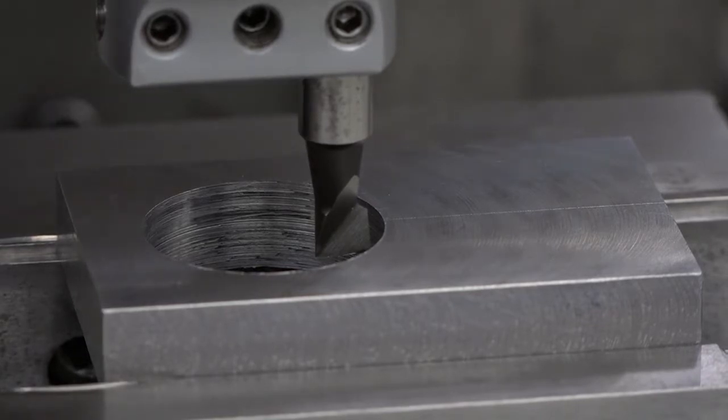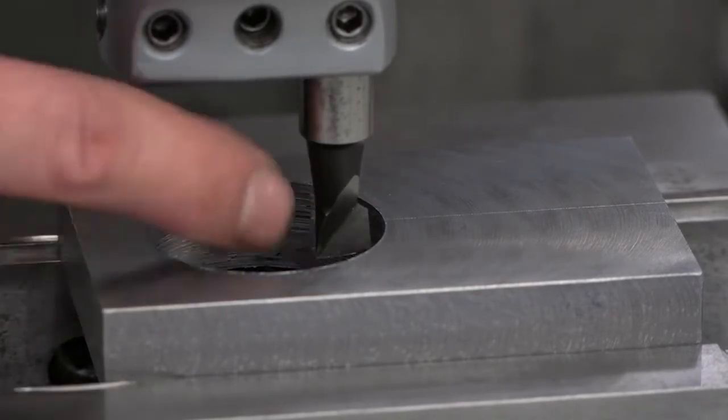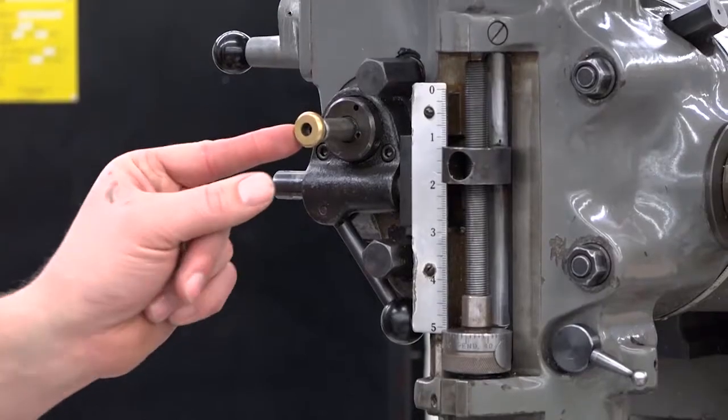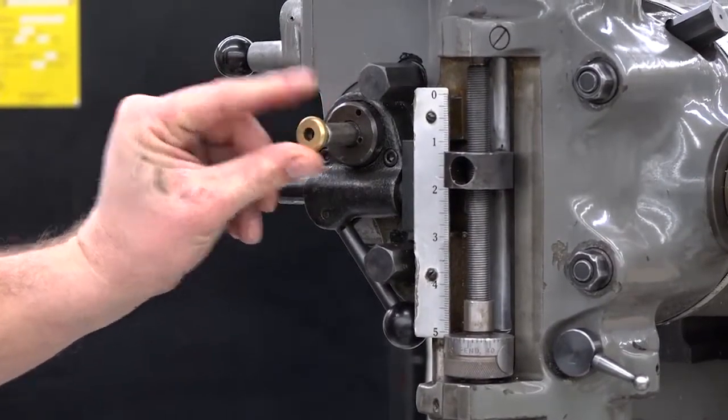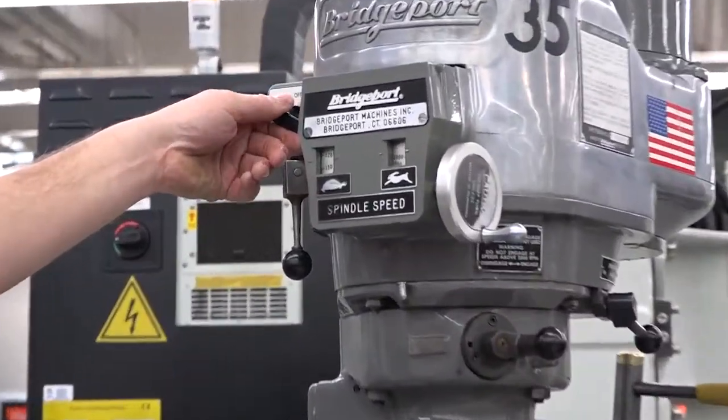Set the direction you want the quill to feed, then turn on the spindle and set the RPM.